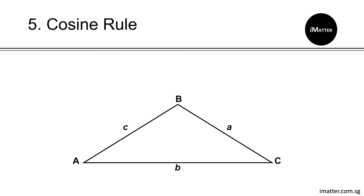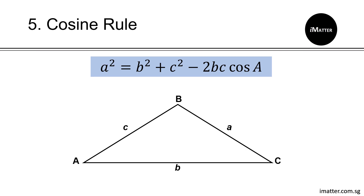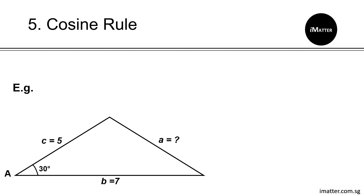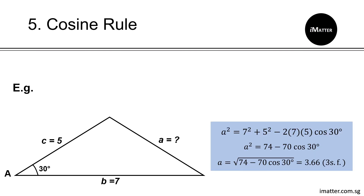The second rule for non-right-angled triangles is the cosine rule. With sides and angles labeled, the formula is: a² equals b² plus c² minus 2bc·cos A. Take note whether each letter is a capital (angle) or small letter (side). In a sample question where angle A, side C, and side B are given and side a is unknown — substitute the known values into the cosine rule formula to get side a equal to 3.66. Remember to give answers to 3 significant figures.